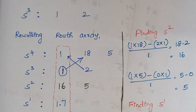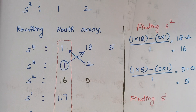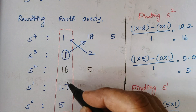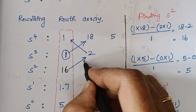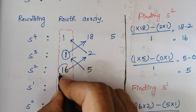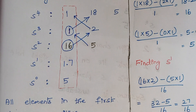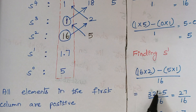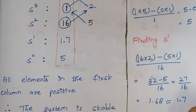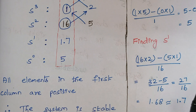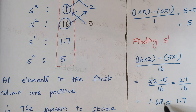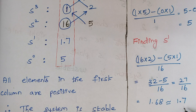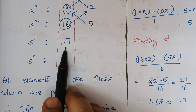Next we find S¹. Using the same procedure: (16×2 − 5×1) / 16 = (32 − 5) / 16 = 27/16, which equals approximately 1.68, simplified to 1.7. So the S¹ row value is 1.7.